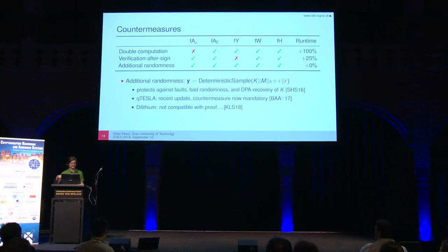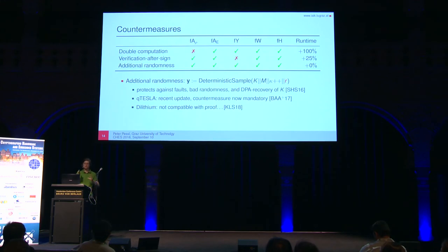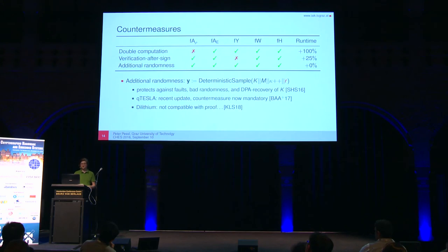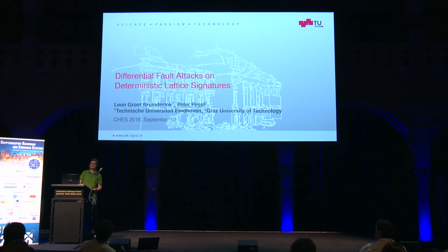For Dilithium, there is a problem: the security proof requires determinism. The alternative non-deterministic version is not tight and loses security proportional to the number of signatures seen per message. So whether adding randomness fully addresses the issue is an open problem, but the attacks still violate some security guarantees. That's the end of the presentation.